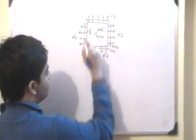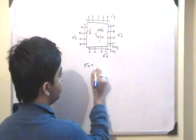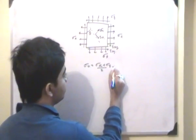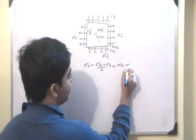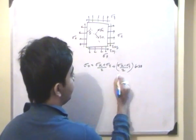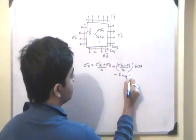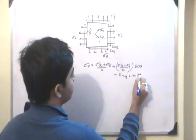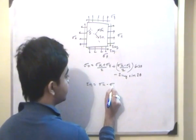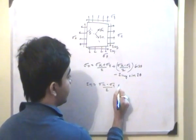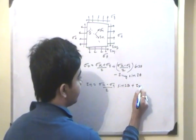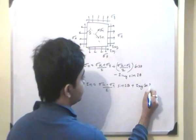If I have this state of stress, I have sigma_n to be equal to sigma_x plus sigma_y by 2, plus sigma_x minus sigma_y by 2 times cos(2θ), minus tau_xy times sin(2θ). And tau_n to be equal to sigma_x minus sigma_y by 2 times sin(2θ) plus tau_xy times cos(2θ).